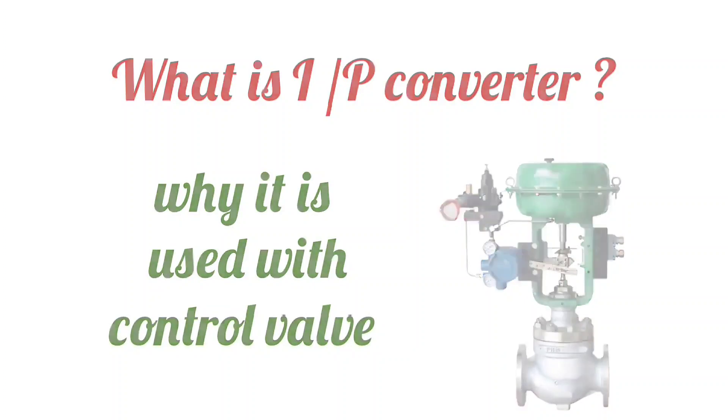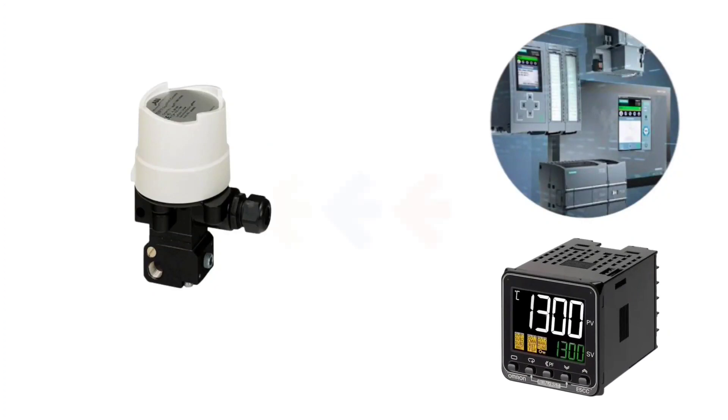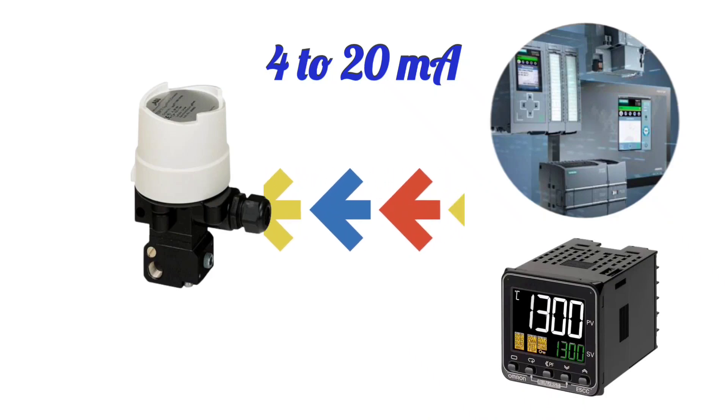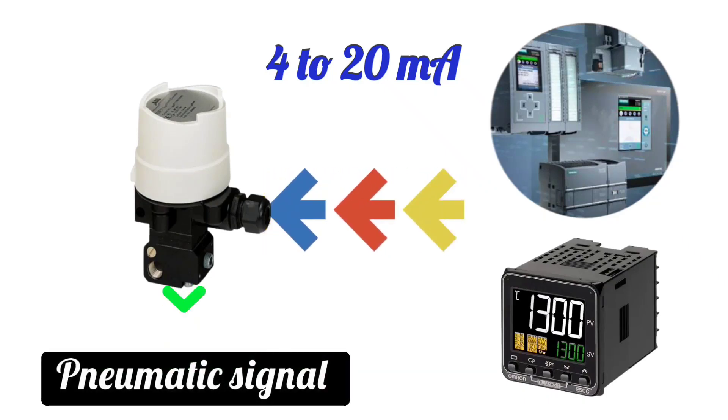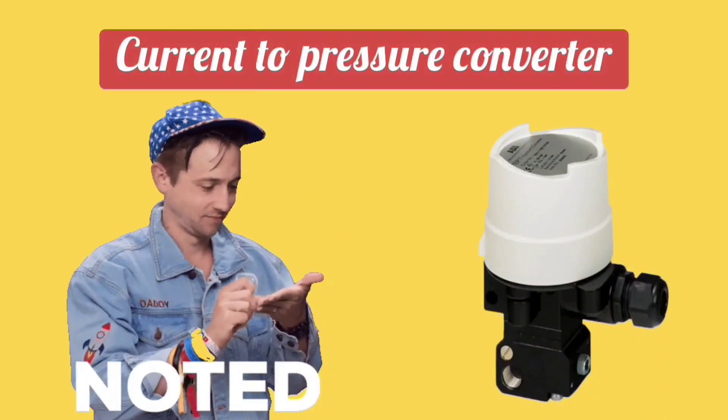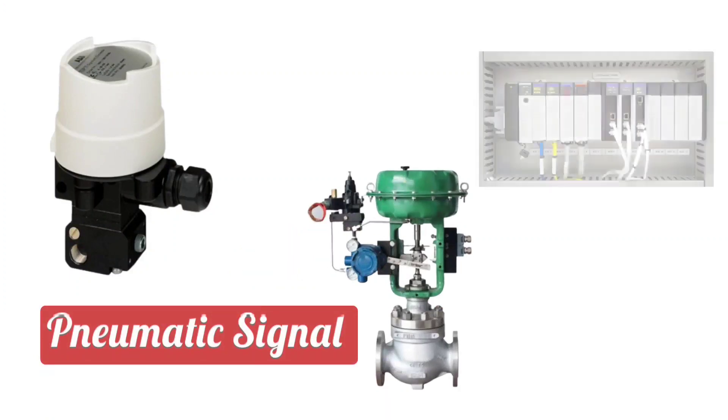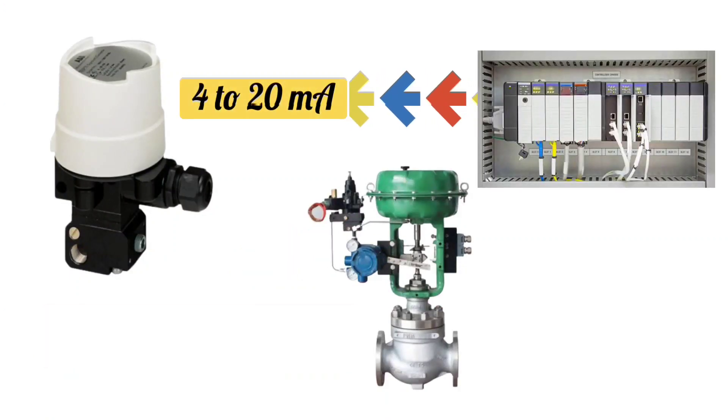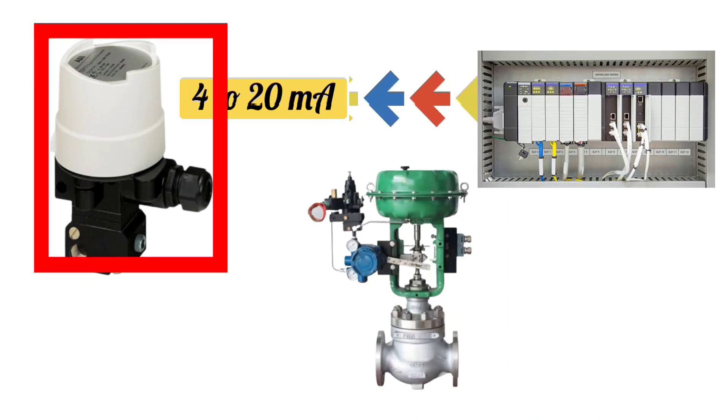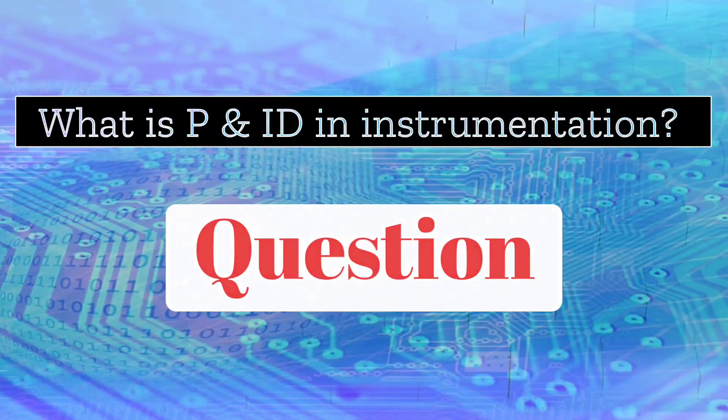Let's see the next question: What is I2P converter? Why use it with control valve? The function of I2P converter is to convert the current signal coming from PLC or PID controller, which is 4 to 20 mA, into pneumatic signal. That's why it is also called current-to-pressure converter. From the I2P converter, the pneumatic signal is given to the control valve. To make the control valve operate according to 4 to 20 mA, I2P converter is used.